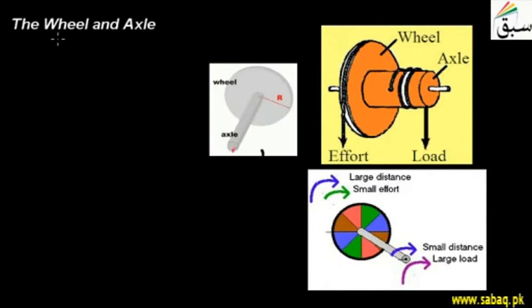Students, today our topic is the Wheel and Axle. Wheel and Axle is a machine which is called a simple machine. There are two parts of it: one wheel and one axle.